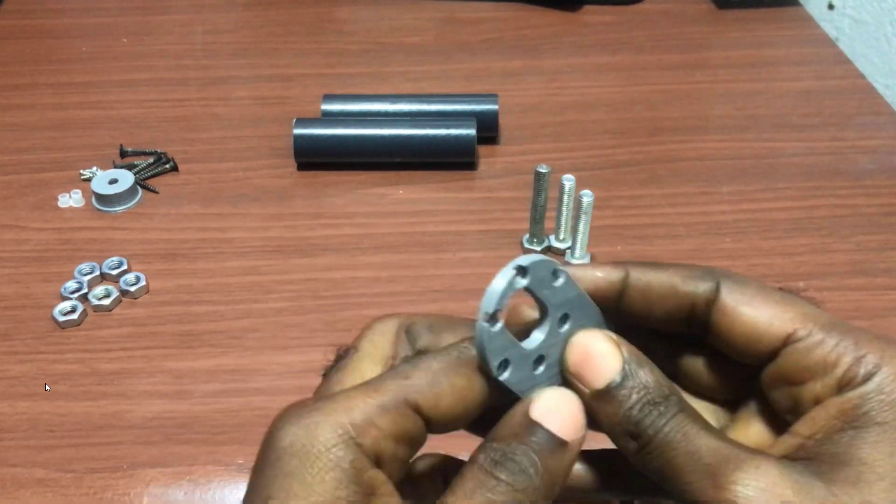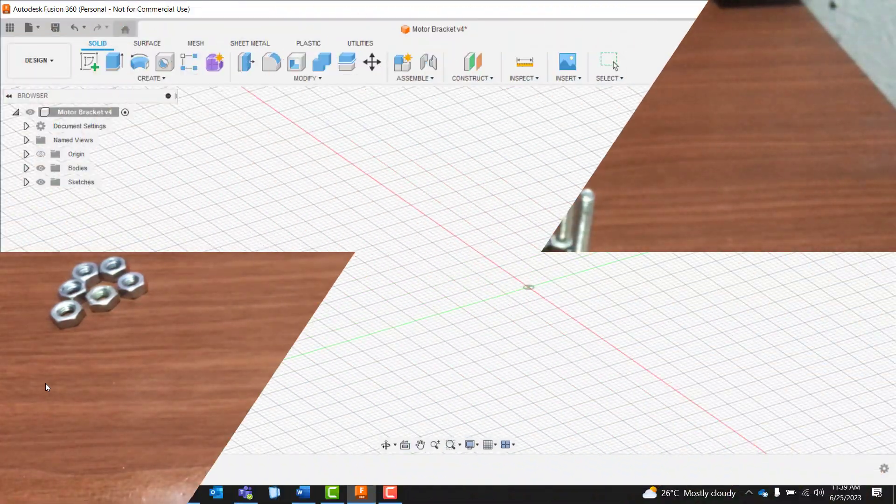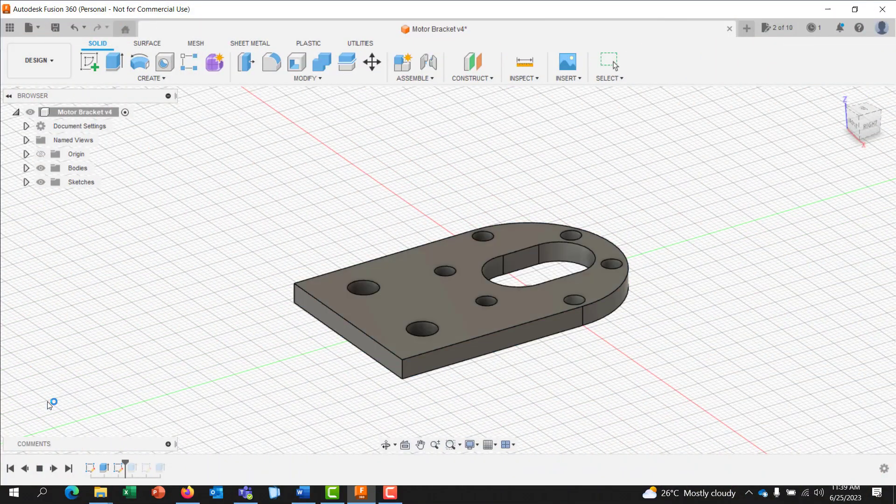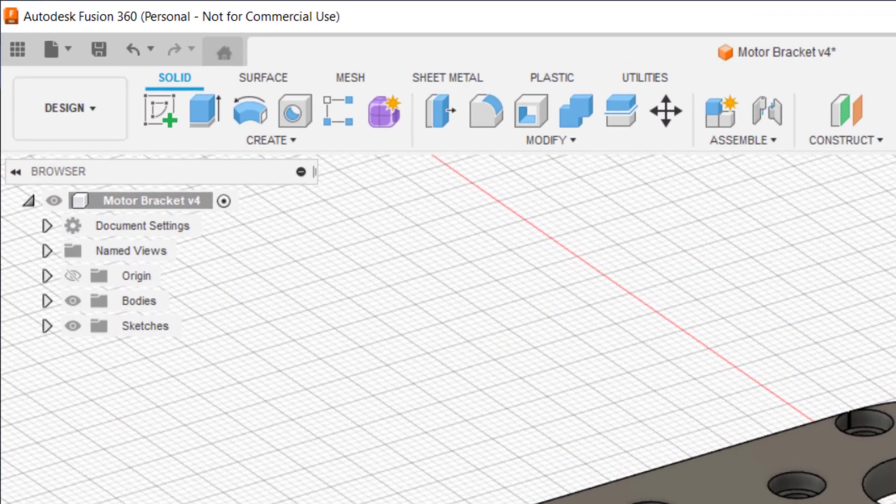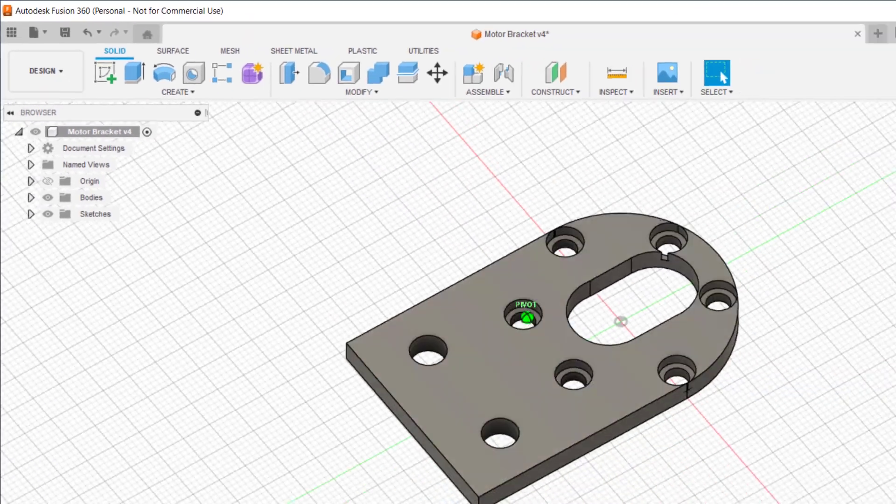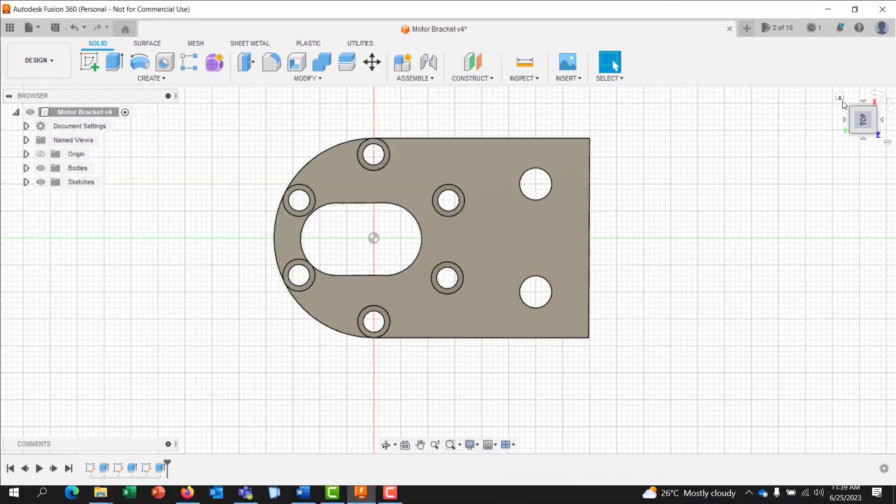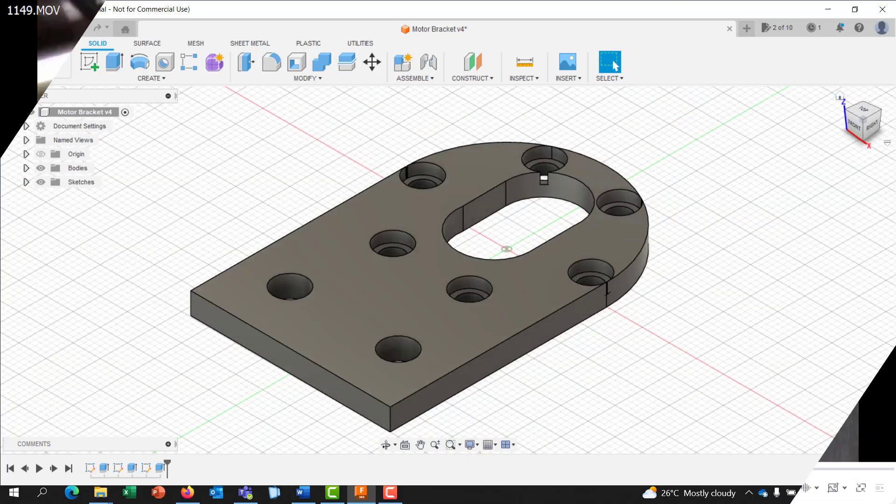We need to 3D print this particular part. To get it, I 3D designed it using Fusion 360. We can see the design is perfectly done.